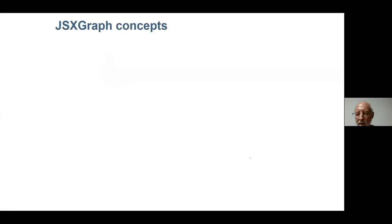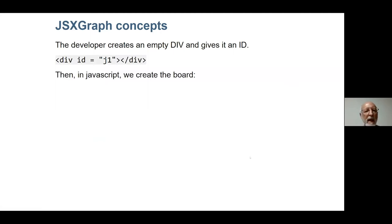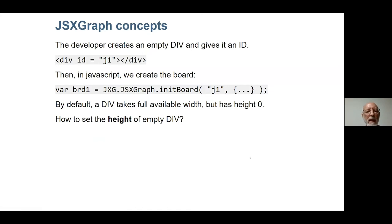This sounds fundamental but it'll be very quick — 90% of you will know this. We create an empty div, give it some sort of ID, and then we create the board using this syntax, so our JSXGraph board will go in the div with ID 'j1'. By default a div takes the full available width but has height zero. So how do we set the height of an empty div so that it works on a large monitor, a laptop, a tablet, a phone, and all sorts of different screen sizes?